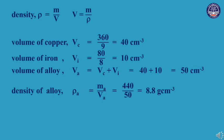This gives a result equal to the total mass divided by total volume. With total mass equal to 440 grams and total volume equal to 50 cubic centimeters, the density of the alloy is equal to 8.8 grams per cubic centimeter.